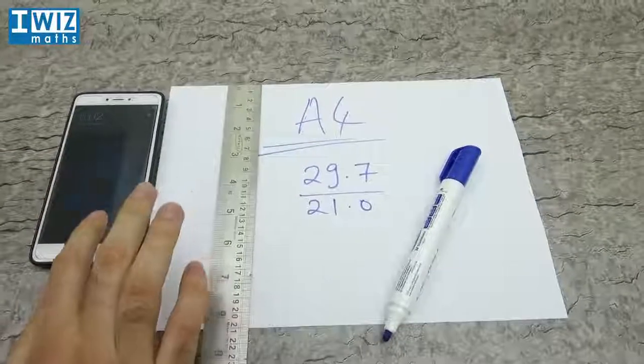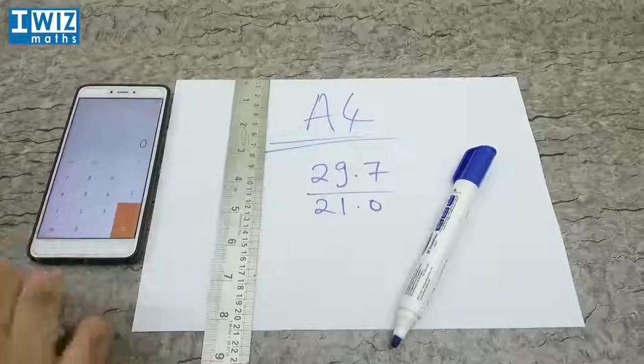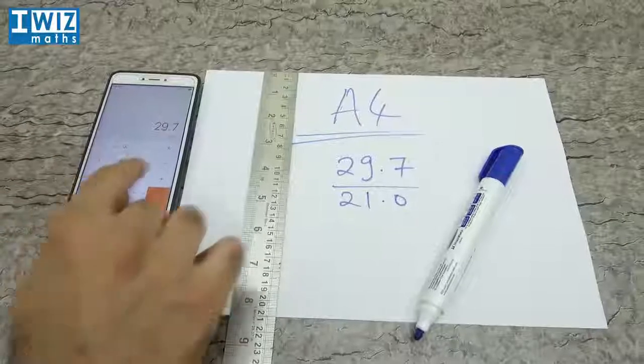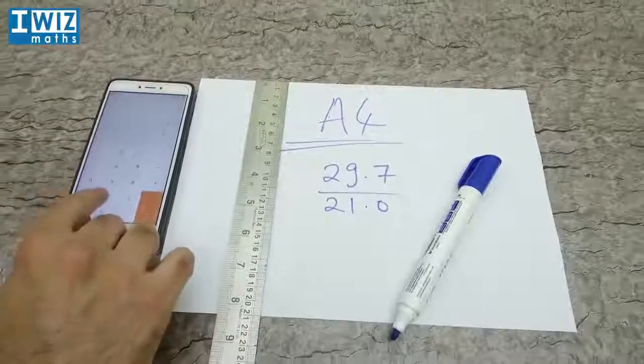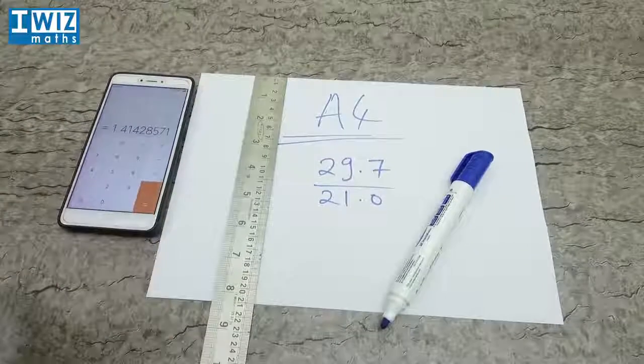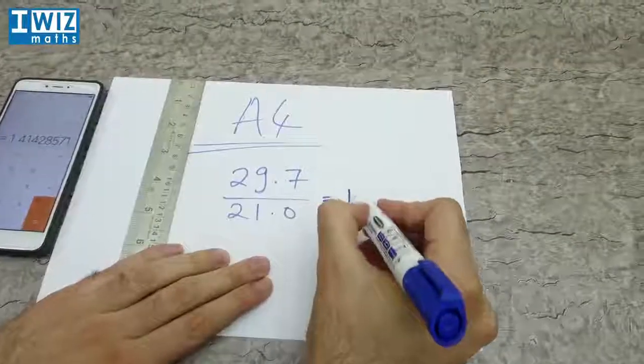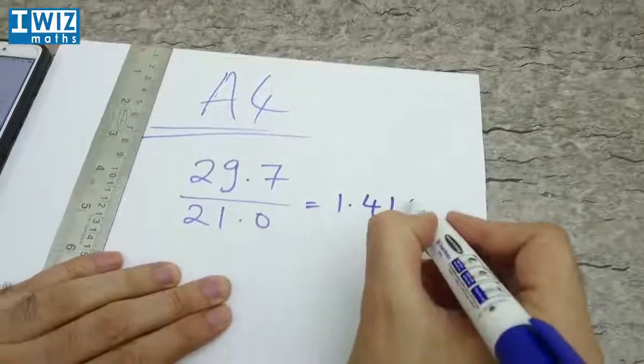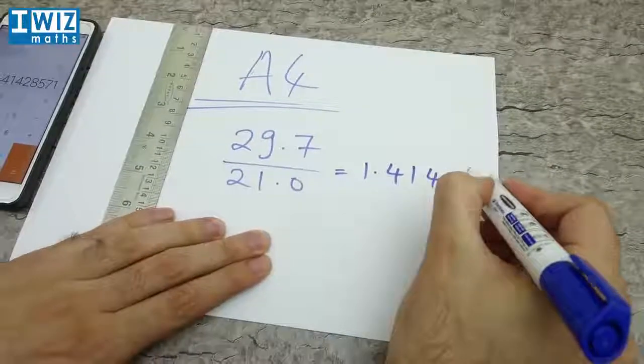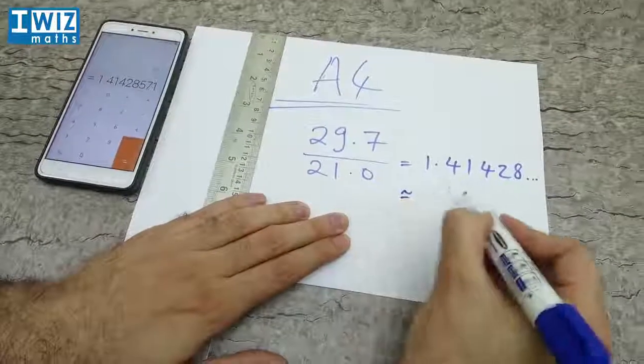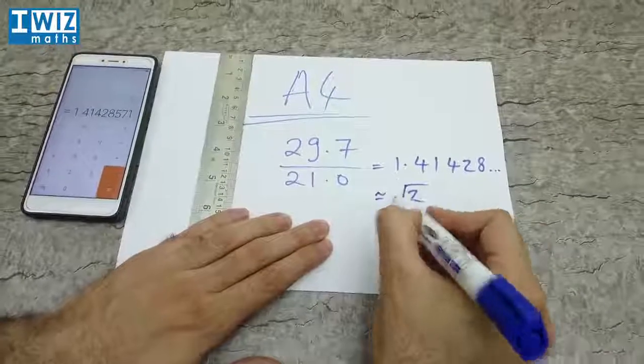So that would be 29.7 divided by 21. What do we get? Let's note that down. That is 1.41428 and so on, and that's more or less the square root of 2.